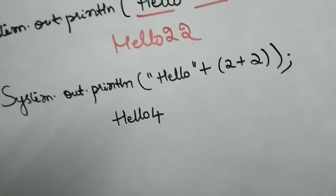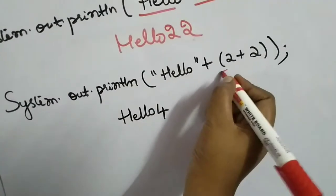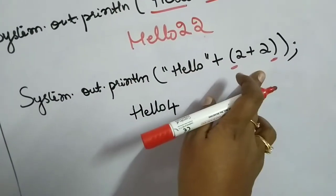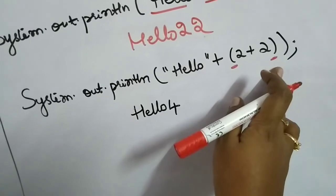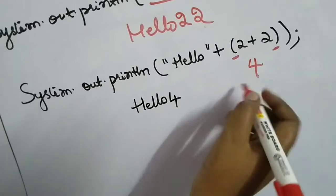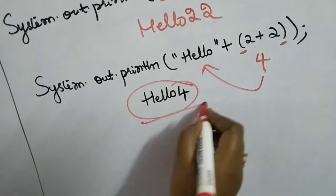If you want certain operations to be performed first, you can use parenthesis. Since I want this operation to be performed first, I am putting it in parenthesis. So this will execute first, giving four, then it will concatenate to Hello. The output will be Hello4.